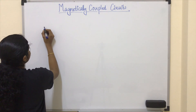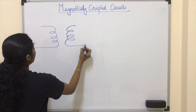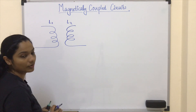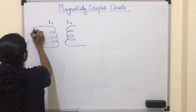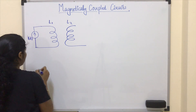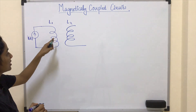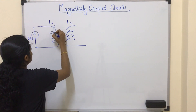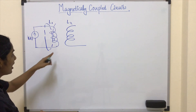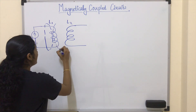For example, consider coil 1 and coil 2, where coil 2 is in the close proximity of coil 1. Suppose coil 1 is excited by a time varying nature of current i(t), and due to this time varying current, a magnetic field is generated by coil 1.